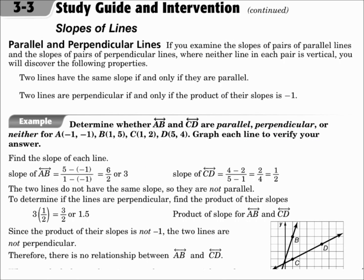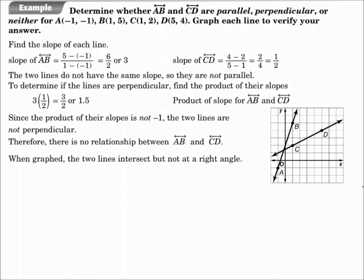Slopes are important when talking about parallel and perpendicular lines. Parallel lines have the same slope, and perpendicular lines have slopes that have a product of negative 1. Also remember that vertical and horizontal lines are perpendicular — zero and undefined slope, you can't take the product of that, but they're still perpendicular. In this example, they're determining whether line AB and CD are parallel, perpendicular, or neither. The slope of line AB is 3 and the slope of line CD is one half. Those are not equal so they're not parallel, and 3 times one half is 1.5, which is not negative 1, so they're not perpendicular. This is neither.